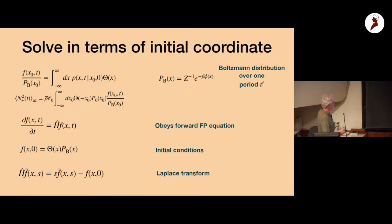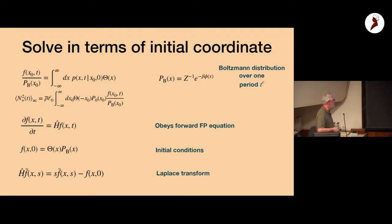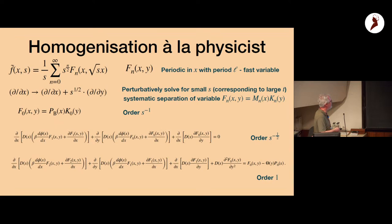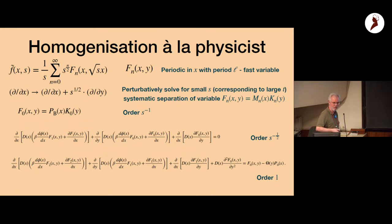F(x₀) obeys a forward Fokker-Planck equation with given initial conditions — normally this object obeys a backward Fokker-Planck equation, but a transformation via detailed balance converts it to forward. You need to solve this equation for varying diffusivity in the late time limit in order to perform the integrals.